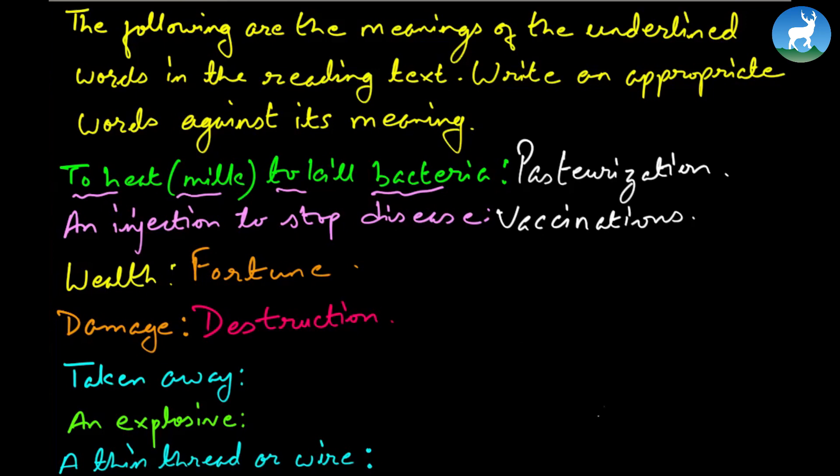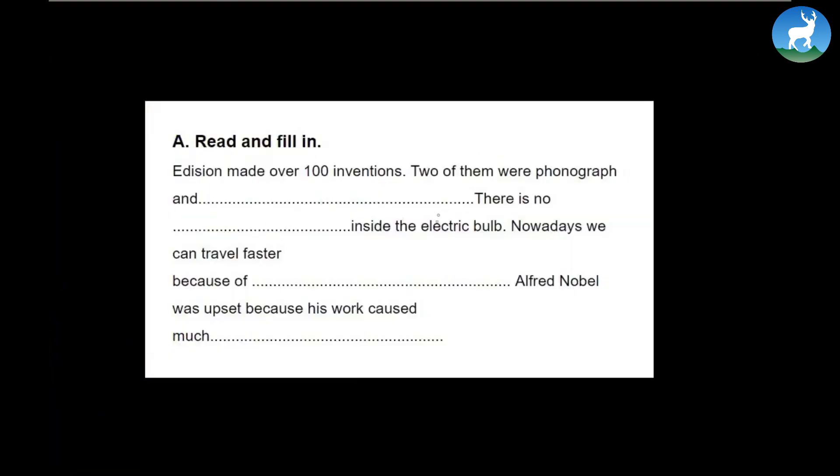Now let's move further. This you can either do it in the classroom or you can do it as homework. Now it's simple: fill in the blanks. Edison made over - in fact it's 1000 inventions. He had more than 1000 inventions in his name. Two of them were phonograph and electric bulb or electric lamp. So once you read the passage, you come across: there's no air inside the electric bulb. Nowadays we can travel faster because of James Watt, because he was the one who invented steam engine. He in a way gave birth to engine. And of course a big credit goes to James Watt. And Alfred Nobel was upset because his work caused much destruction because dynamite was often used in war. So see, this is how this fill in the blanks is done.